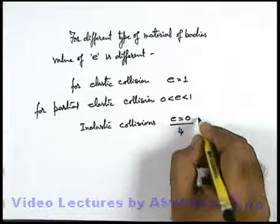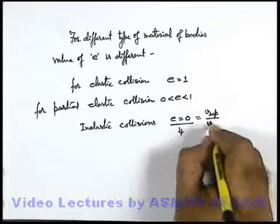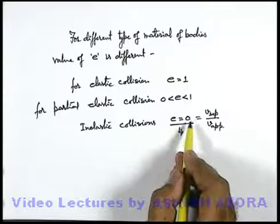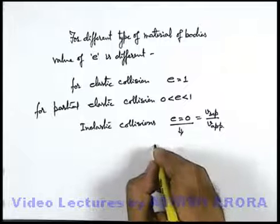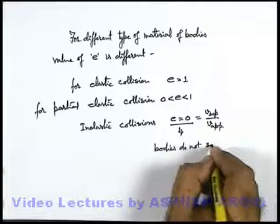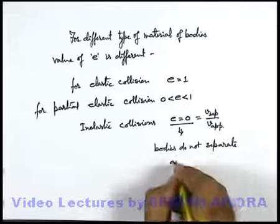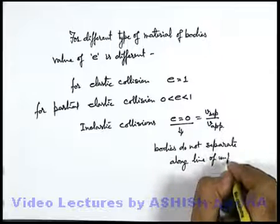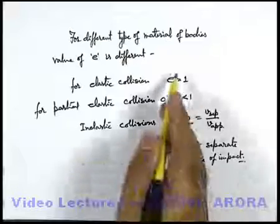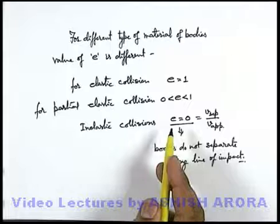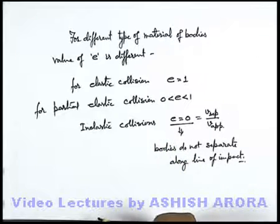This directly implies, as e is velocity of separation upon velocity of approach, if the coefficient of restitution is zero, the velocity of separation will be zero. This implies bodies do not separate along the line of impact. In various numerical problems, we are going to use the value of e as a very important tool for analyzing problems, and we will see several problems based on the numerical value of e soon.